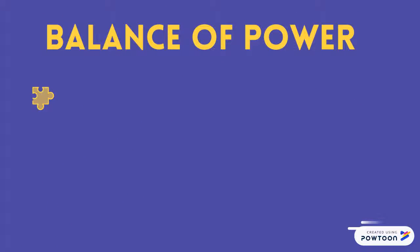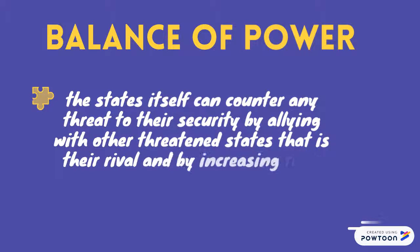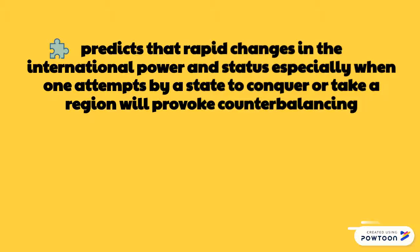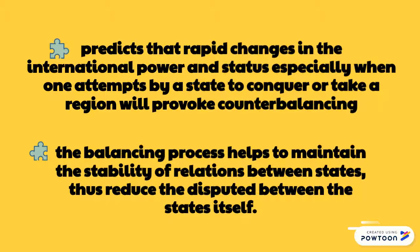Balance of power allows states to counter any threat to their security by aligning with other threatened states, even rivals, and by increasing their military capabilities. Balance of power predicts that rapid changes in international power and status, especially when one state attempts to conquer or take a region, will result in probable counterbalancing. The balancing process helps to maintain the stability of relations between states and thus reduces disputes between states.